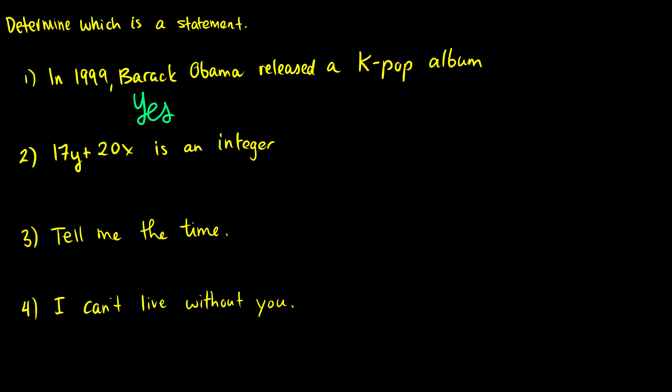Example two: '17y + 20x is an integer.' Is this a statement? The answer is no. It's not a statement because y and x are variables. So this is of the form p(x, y), while a statement is of the form p. It is not a statement if it contains a variable — that's usually what tricks people.